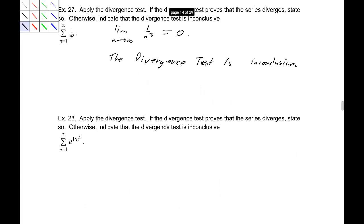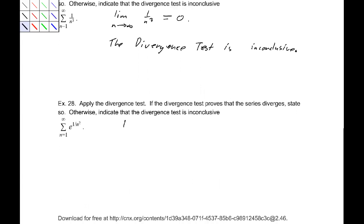All right, let's apply that to 28. Well, if I take the limit of e to the 1 over n squared, this exponent is going to 0, so this is approaching 1. Therefore, the sum from 1 to infinity of e to the 1 over n squared diverges.